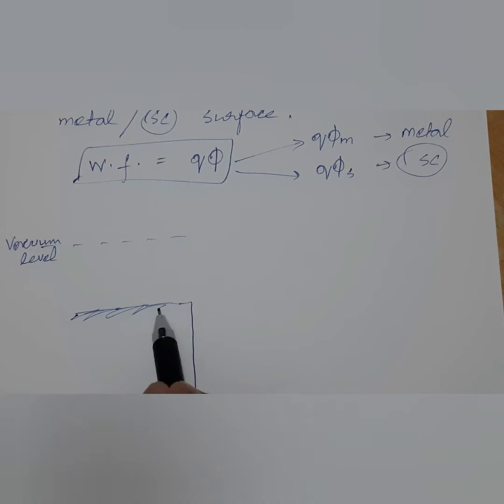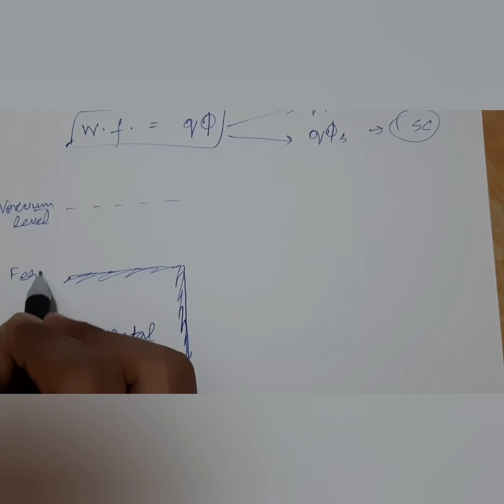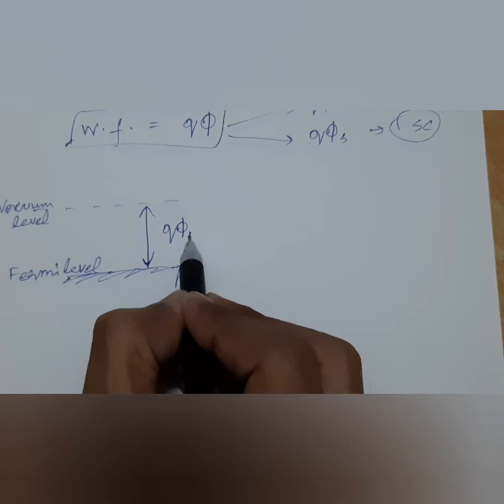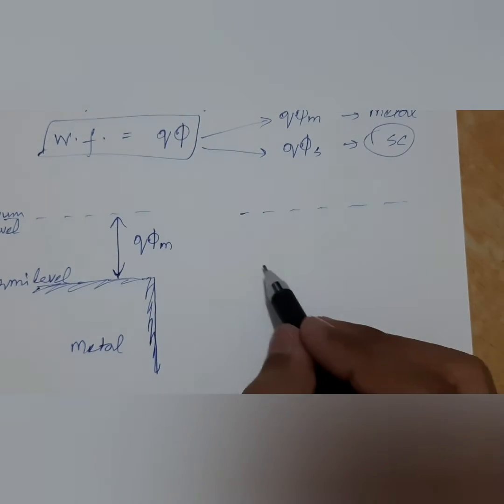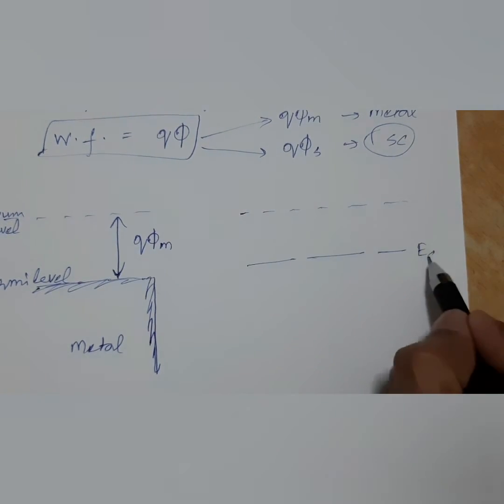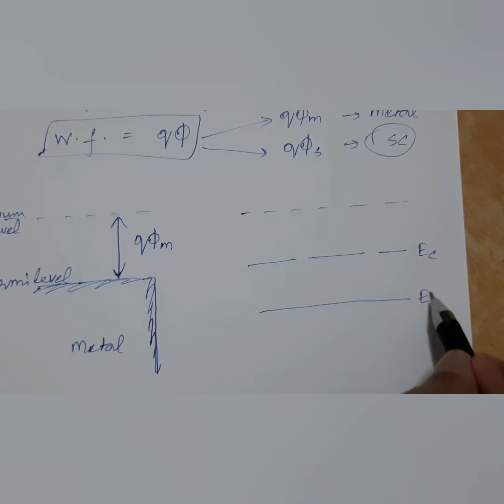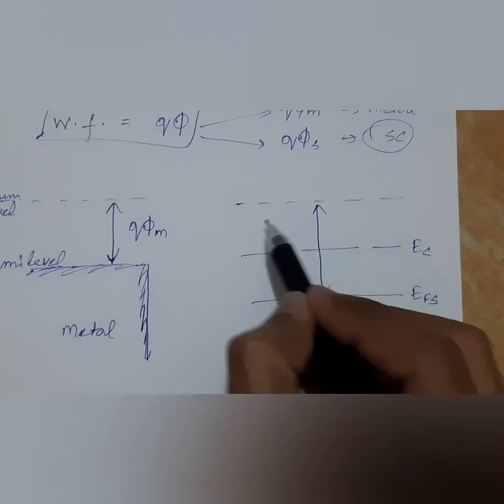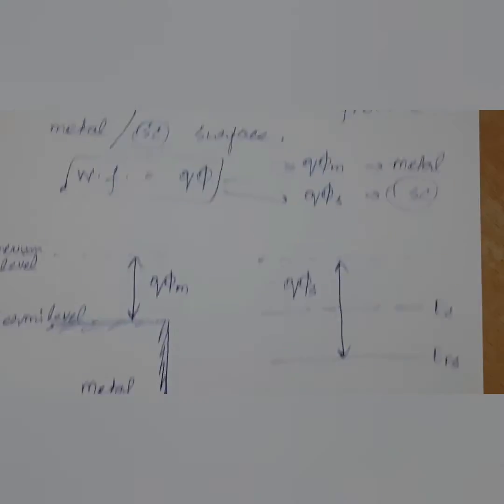I am showing you here a diagrammatic representation to make this concept much more clear. Here is the vacuum level represented by dotted line, and this is a metal where Fermi level is represented by this shaded line. Q phi m is the work function in case of metal, and here in the case of semiconductor it is q phi s, from the vacuum energy level to the Fermi level of the semiconductor.